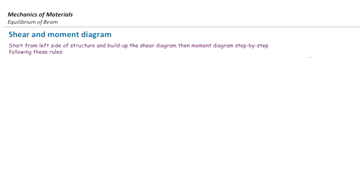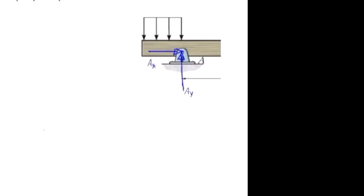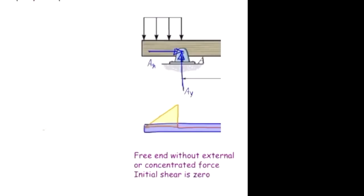We start with the shear diagram, always beginning from the left of the structure. Rule number one: the initial shear value is zero if the structure is not restrained and there is no external concentrated force at that point. For example, if the left end is free with only a distributed load acting on it, the initial shear value is zero.